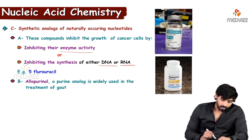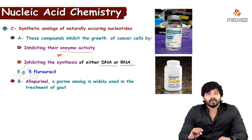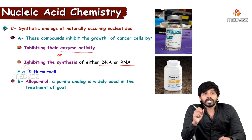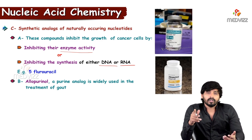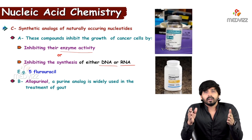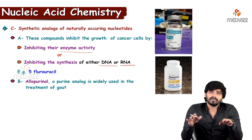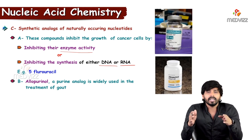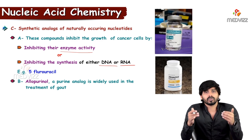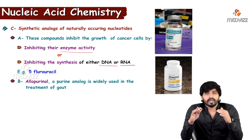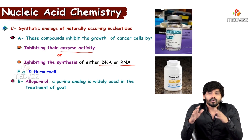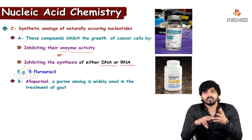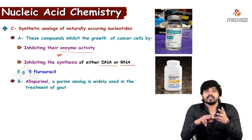Another example is allopurinol, a drug used in the treatment of gout. Gout results from the degradation of purines — when purines degrade, they form the end product uric acid. Normally, nucleic acids degrade to nucleotides, then to sugars and bases; the bases degrade to uric acid. When uric acid is produced in excess, it becomes insoluble and precipitates in the joints, causing gout.